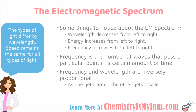Here are some things you should be aware of about the electromagnetic spectrum. The type of light differs by wavelength, and speed remains the same. Wavelength decreases from left to right — it gets shorter as you go from a radio wave down to a gamma ray. Energy increases from left to right; the energy of a radio wave is much smaller than the energy of a gamma ray. Frequency — the number of waves that pass a particular point in an amount of time — also increases from left to right. So frequency and wavelength are inversely proportional: as one gets larger, the other gets smaller.